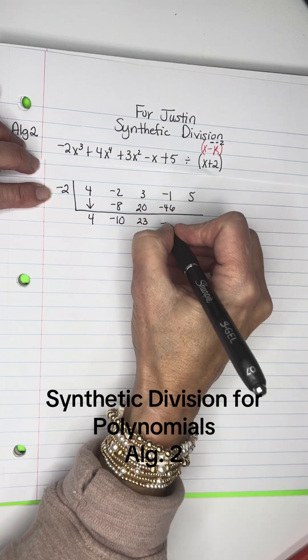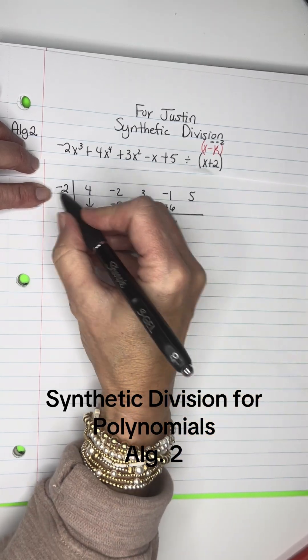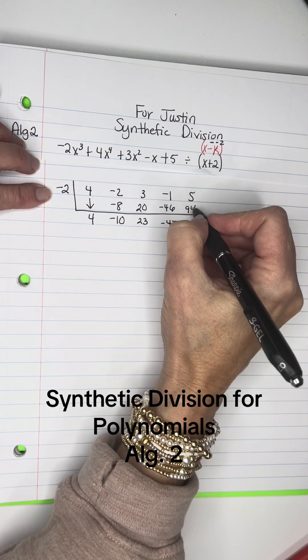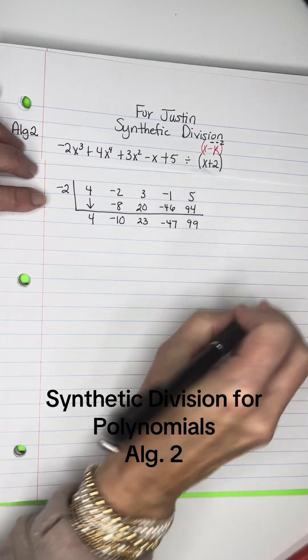Negative 2 times 23 is negative 46. Add those, get negative 47. And then negative 2 times negative 47 is 94. And add those and get 99.